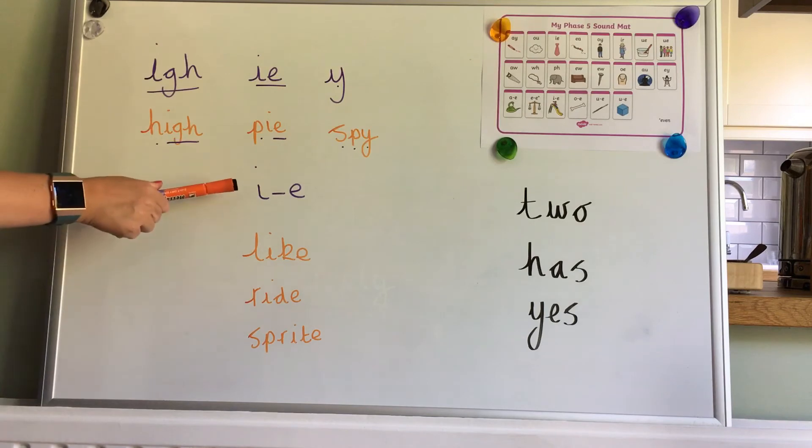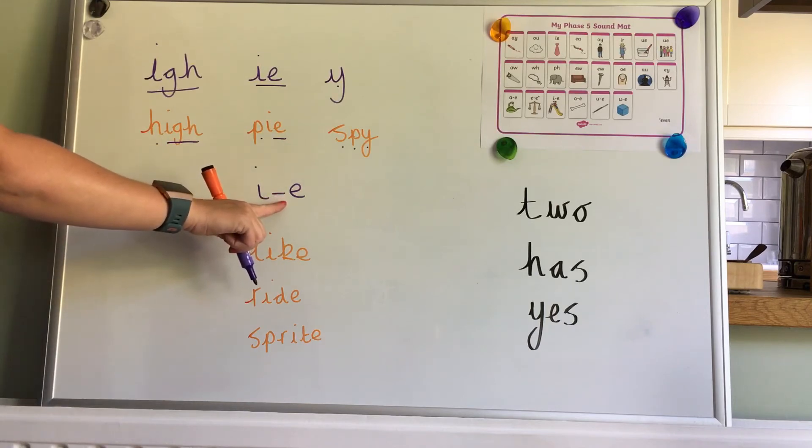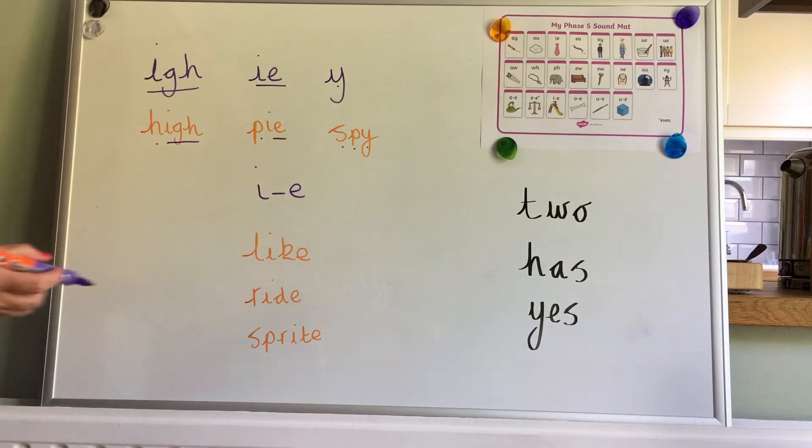Finally, we have split digraph I-E, two letters making one sound, but we need to put a sound in the middle to make a word. Let's take a look at some words with this spelling.